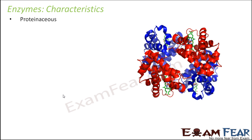Enzymes are proteinaceous because most of the enzymes are protein in nature. They can be simple protein enzymes, which are purely made up of proteins, or they can be conjugate protein enzymes, that is holoenzymes. They have a protein group and a non-protein group, which can be a co-factor or a co-enzyme.